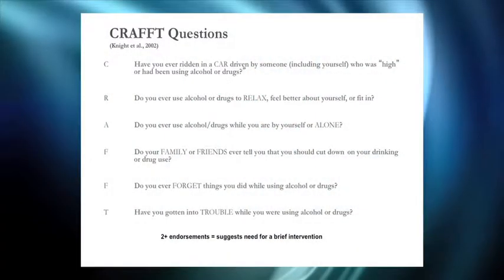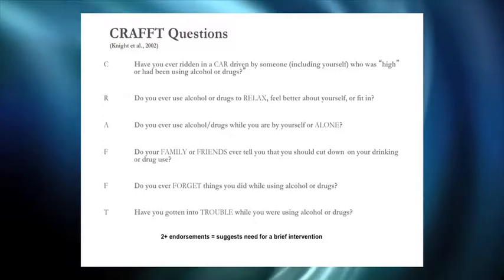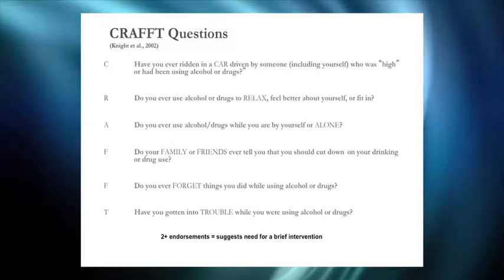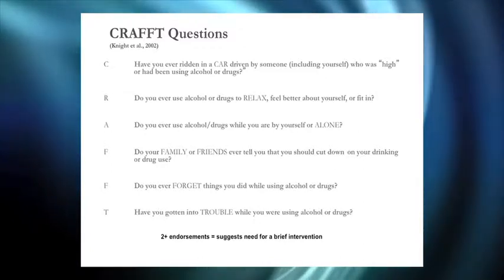Many of them are public domain, so you'll be able to get the actual instrument from the website; for cost items, you'll need to go to the publisher or author. I'm a big fan of the CRAFFT. These six items — two or more yes answers — suggest the need for brief intervention. You could do this in interview format or as a paper-and-pencil true-false questionnaire. Sometimes teenagers are more comfortable filling out a questionnaire privately on paper or computer when they don't know you well yet, rather than being interviewed.